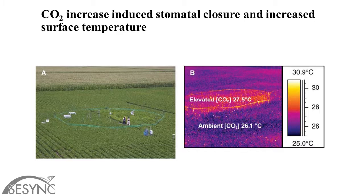They did a FACE experiment with elevated CO2, and what they found — which I think people kind of knew but didn't know how significant the effect would be — is that CO2 increase induced stomatal closure. Stomates are the little pores on the undersides of leaves through which water and gas exchange. That's where CO2 goes into plants, and water vapor comes out. When you elevate CO2, plants don't need to keep their stomates open so much, because they're getting more CO2. So their stomates close.